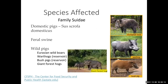The species affected are only the family Suidae — domestic pigs. In the US, one of the big risks would be feral swine. In other countries, wild native pigs such as Eurasian wild boars, warthogs, bush pigs, and giant forest hogs are also susceptible. In Europe, Russia, and parts of Asia, wild boar have been one of the reservoir hosts where the disease has been maintained for several years.